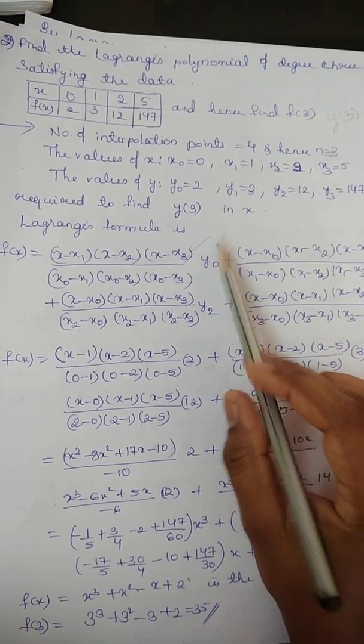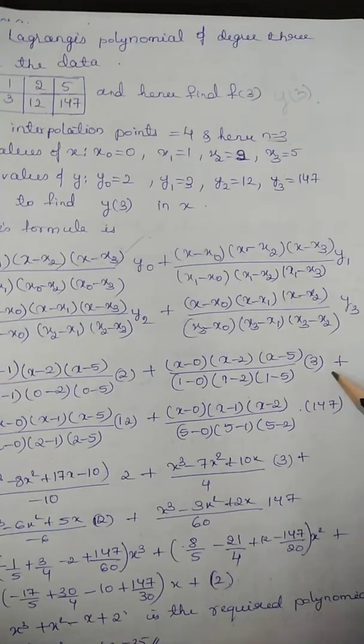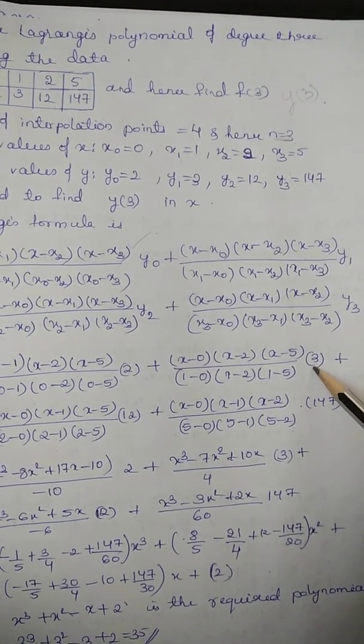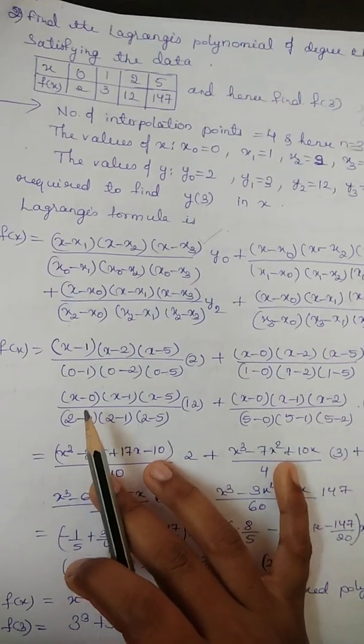And this y0 we have to put, that is here, it is equal to 2. Here, y1 value, that is 3. y2 value 12. And then, last y4. Now, see, here.